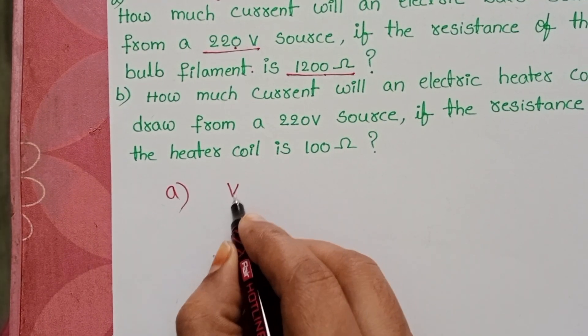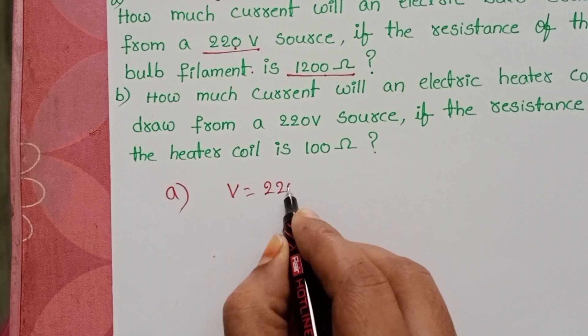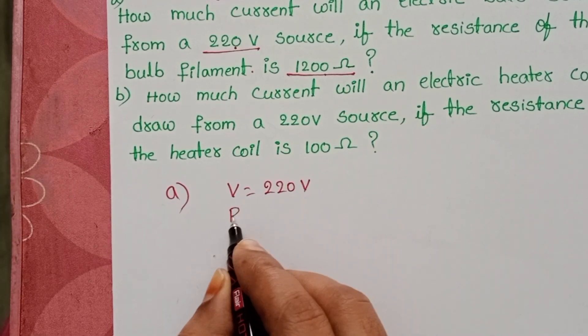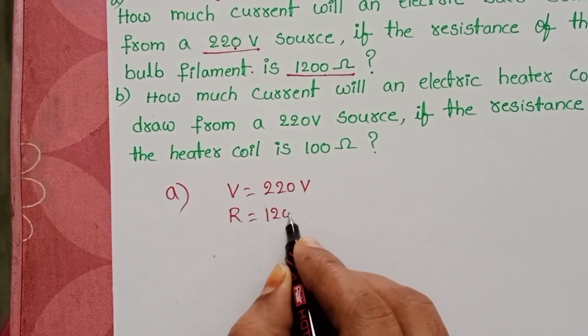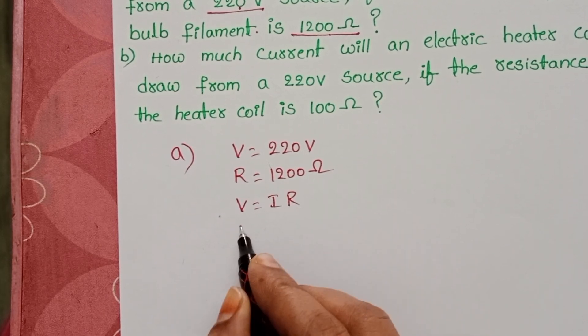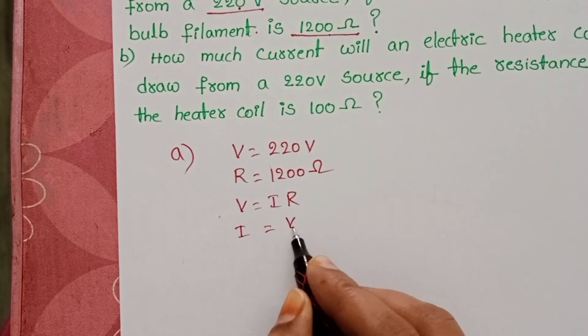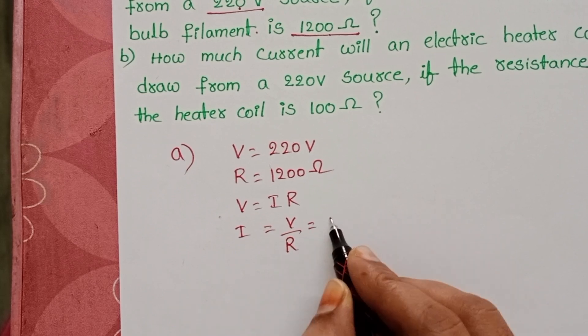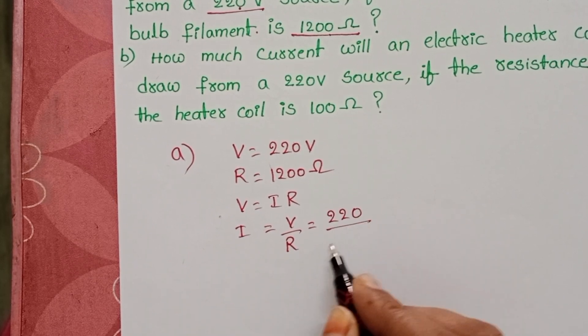Given: potential difference is 220 volts and resistance equals 1200 ohms. Take Ohm's law: V equals IR. Therefore, I equals V by R. 220 by 1200.